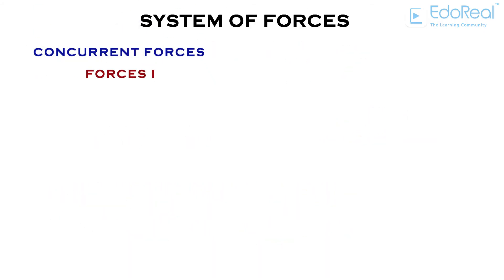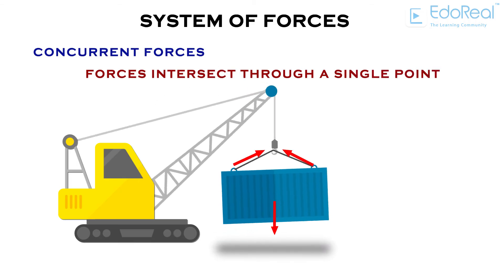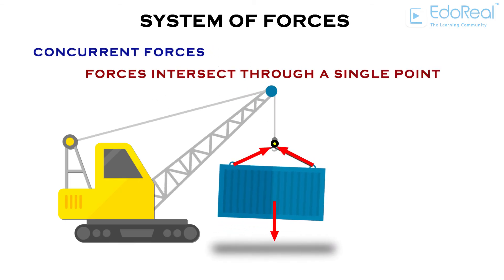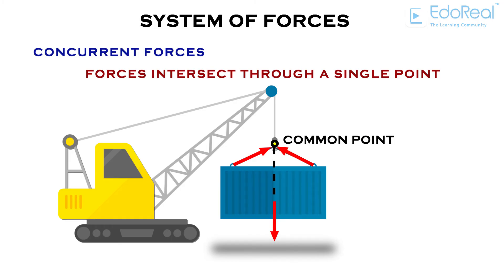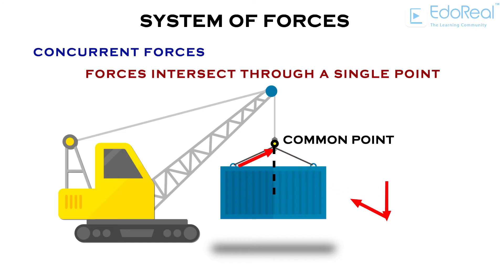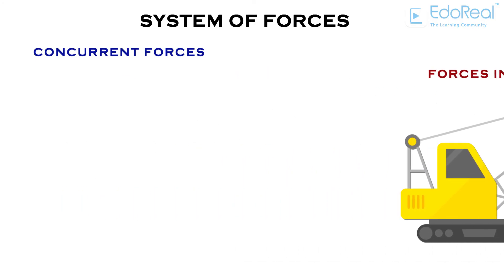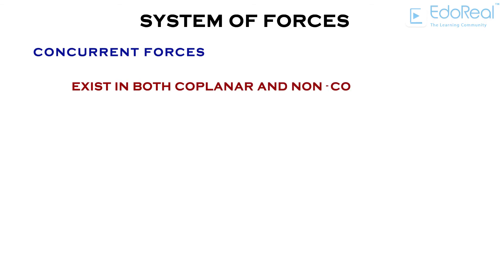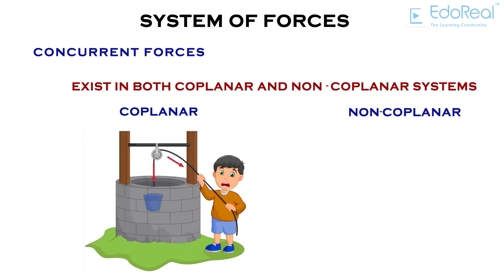Concurrent forces: if all the forces intersect through a single point, then they are called concurrent forces. However, all of them might not actually be in contact with the common point. Concurrent forces need only magnitude and direction, since the point of application is already known. If forces are concurrent, we can add them as vectors to get the resultant. These forces exist in both coplanar and non-coplanar systems.